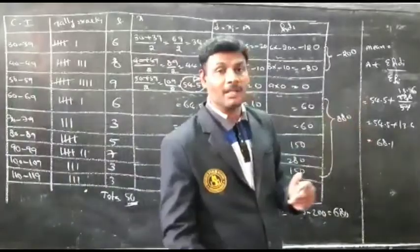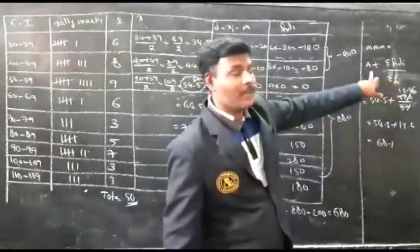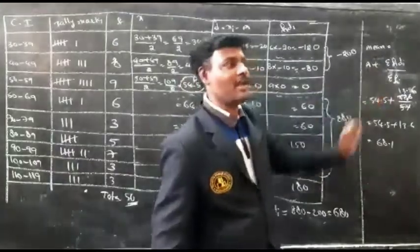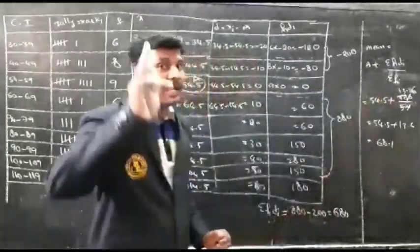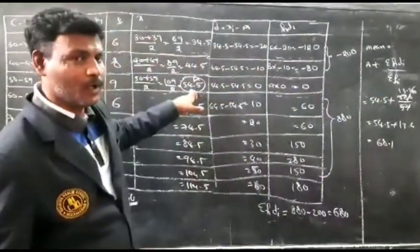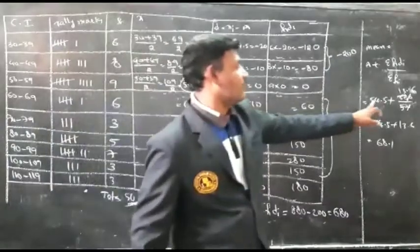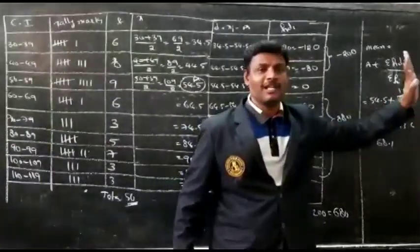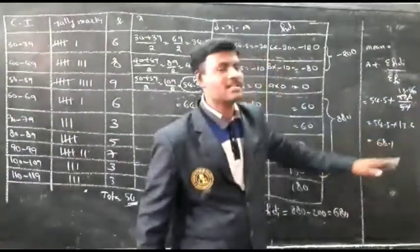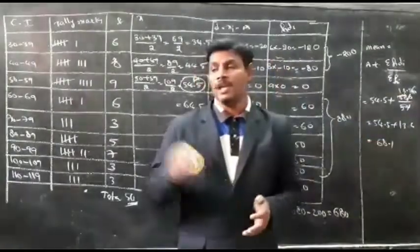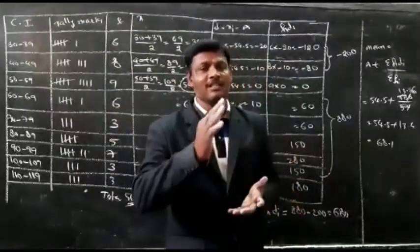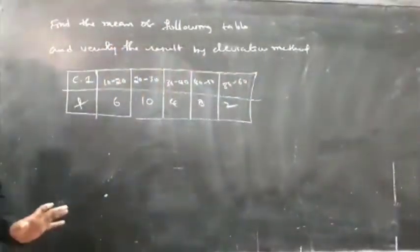The formula to find the mean by deviation method is A plus Sigma FiDi divided by Sigma Fi. A is the assumed mean, 54.5. So the mean equals 54.5 plus 680 divided by 50, which gives 68.1. In both the direct method and the deviation method, the answer is the same — confirming the result.